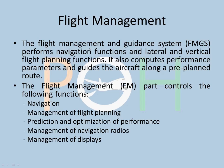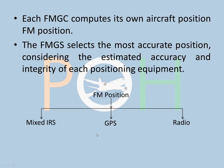The flight management part controls the following functions: navigation, management of flight planning, prediction and optimization of performance, management of navigation radios, and management of displays. Each FMGC computes its own aircraft position, called the FM position. The FMGC selects the most accurate position considering the estimated accuracy and integrity of each positioning equipment. There are three ways of doing it: mixed IRS, GPS, and radio.